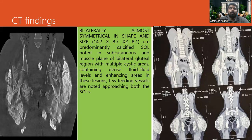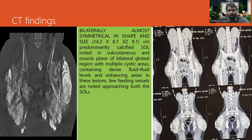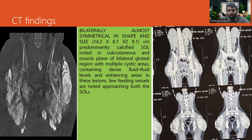We then sent the patient for a CT investigation, which revealed bilaterally almost symmetrical in shape and size, predominantly calcified swelling noted in the subcutaneous and muscle plane of bilateral gluteal region, with multiple cystic areas containing dense fluid-fluid level and enhancing areas in this lesion. A few feeding vessels were also noted in this lesion.